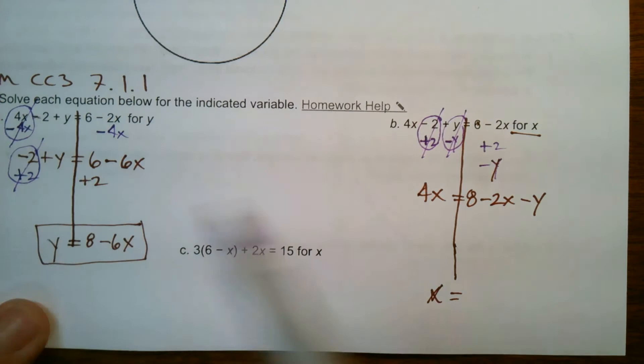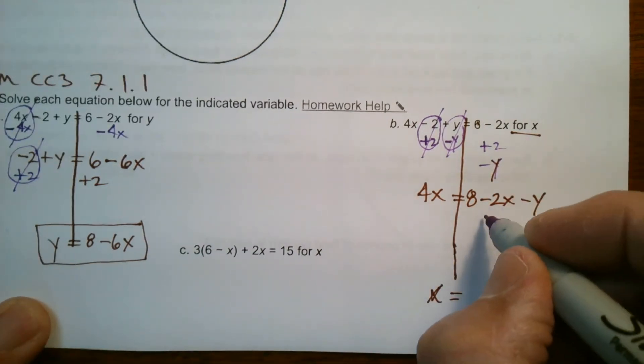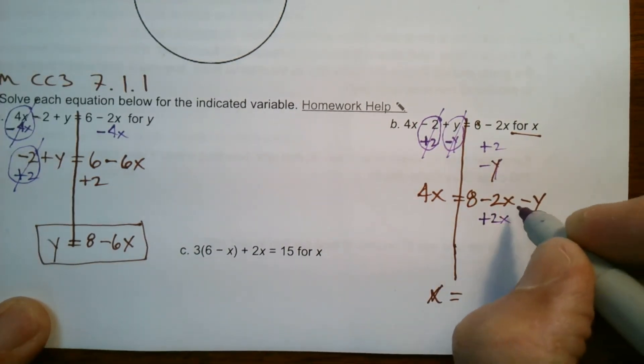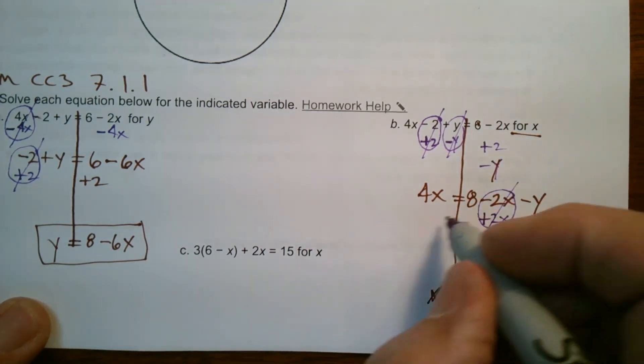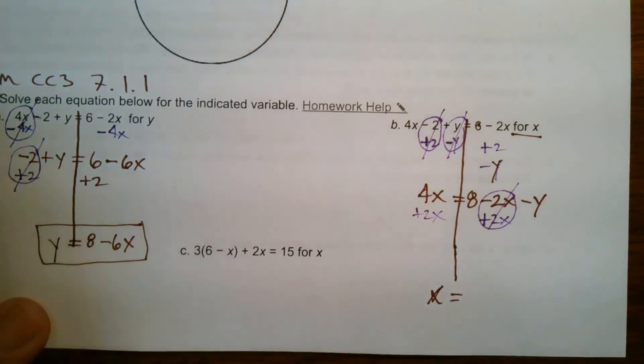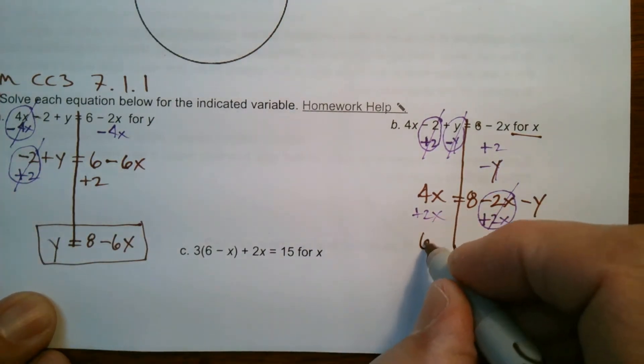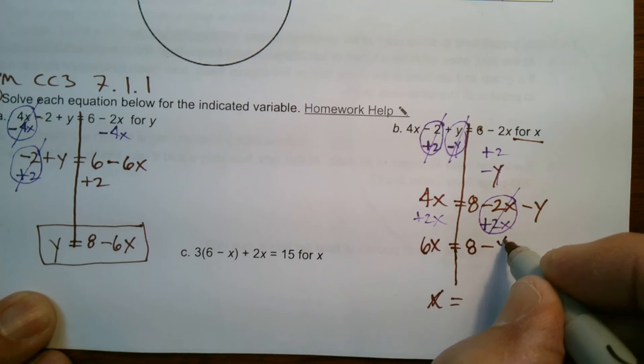So that now I've got still x's on one side. I need to get them all on this side. So I got to get rid of the x's over here. So I'm going to add 2x to this side to zero it out. And then it'll end up on this side. So we have 6x equals 8 minus y.